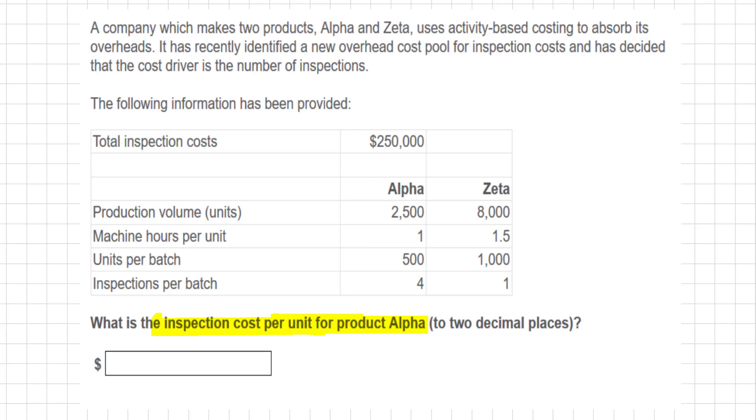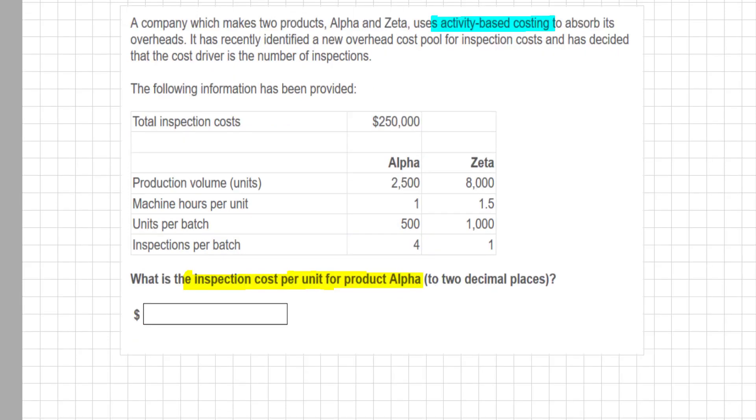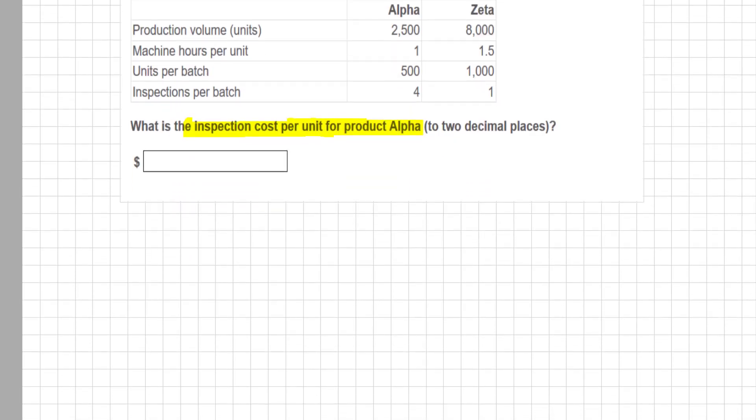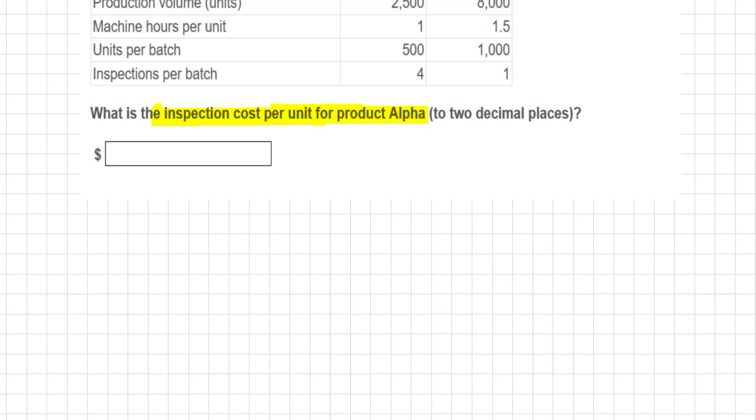Aha, I see a keyword here. Activity based costing. Okay, so before I do anything, I will, on scratch paper, write down the steps to activity based costing.